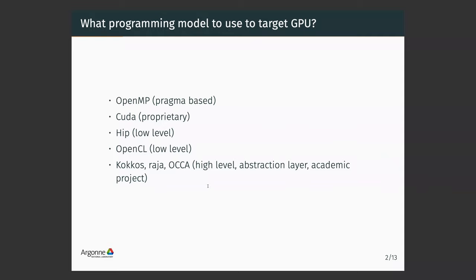This is why we saw the development of frameworks like Kokkos, the famous Raja, or Oka, which have high-level abstraction layers. They feel like C++ and you can use templates. But both of these frameworks are academic projects, developed by a few — albeit smart — people, not a big team. So there may be problems; it's not clear if they will be sustainable in the future. They are going in the right direction, but they are still academic projects.